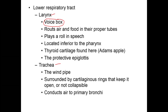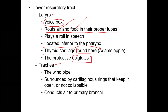The larynx is the voice box area. It also routes air and food into their proper tubes — air goes into the trachea, food goes into the esophagus. You find the thyroid cartilage here, which in lay terms people call the Adam's apple. You also find the epiglottis here — its job is to cover your windpipe so that food or drink does not go down your windpipe.